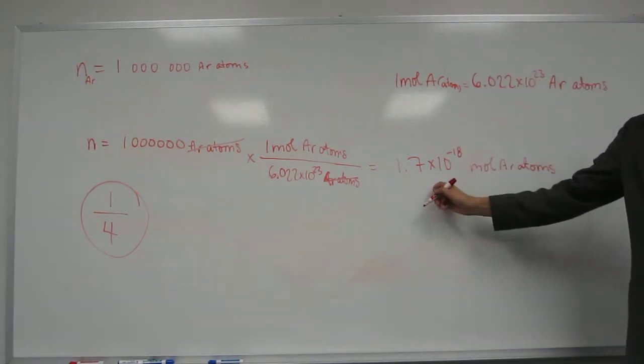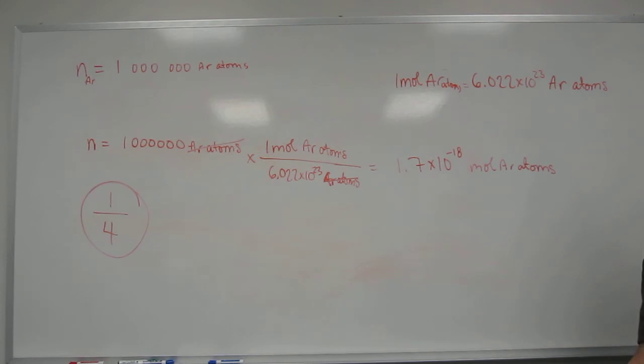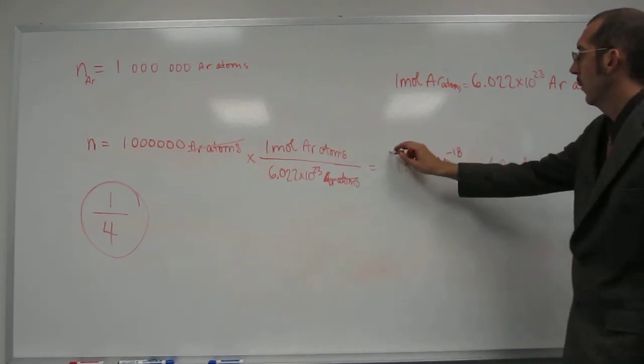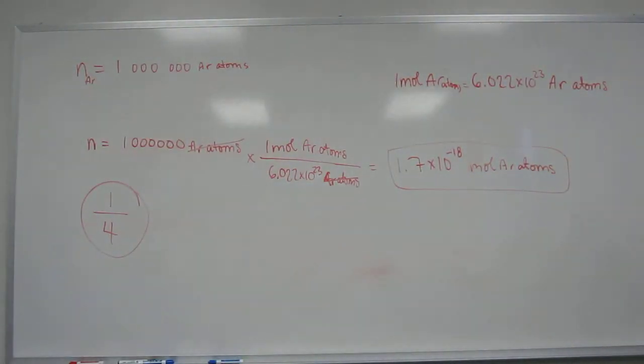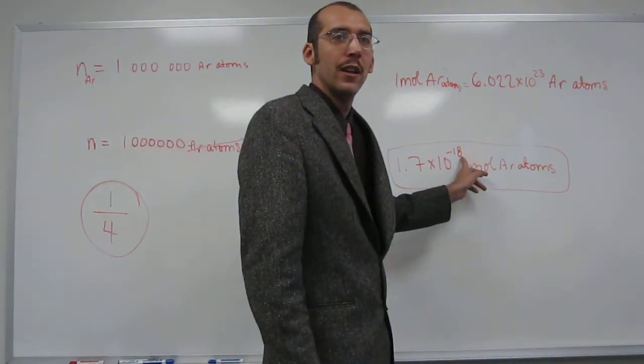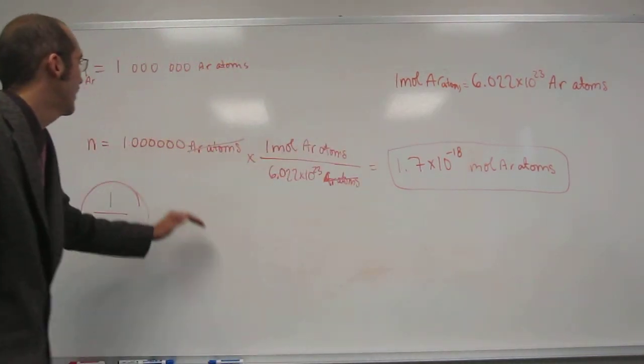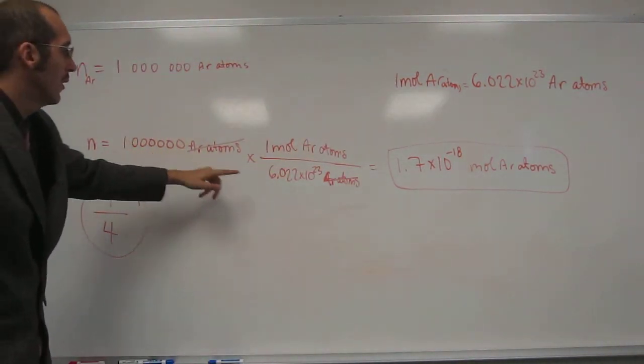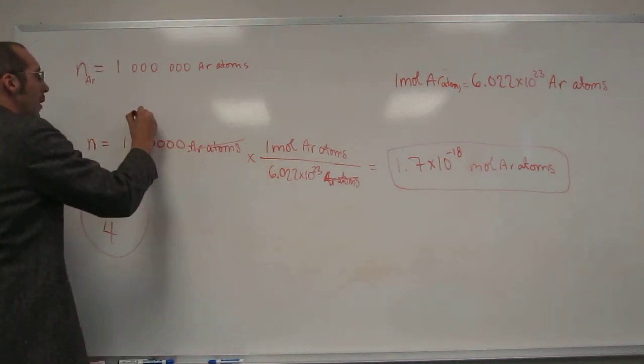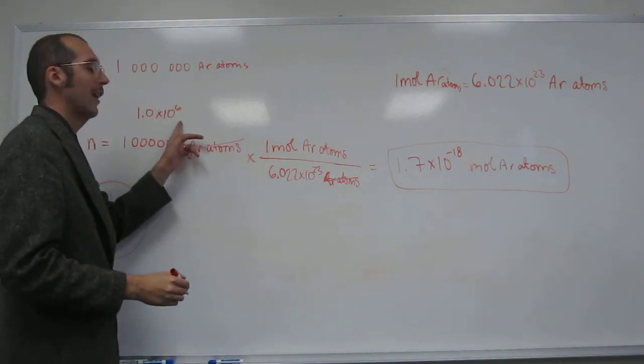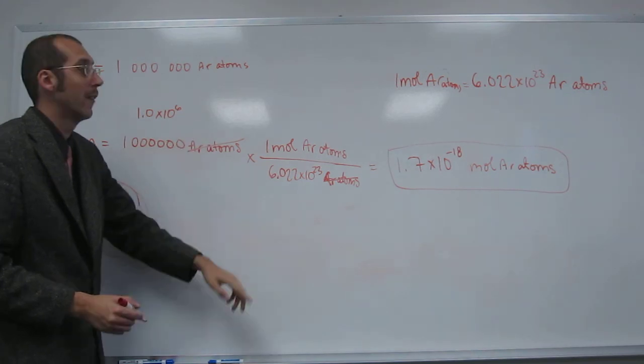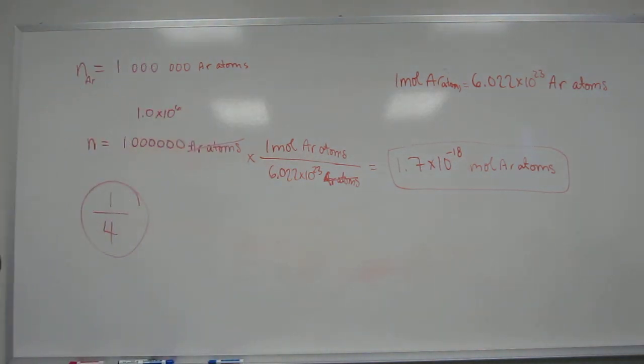Is that number bigger or smaller than one? That's smaller. How do you know that? Because of the negative on the 18th. So you want to always check yourself before you go on to the next problem. If you get something that's up to the 23rd or something, that doesn't make any sense. Because this isn't even one mole. Because one mole is this many. So if this is 1.0 times 10 to the sixth, that's not that many. That's not even close. You still got to multiply that by almost four to get there. Cool with that one?